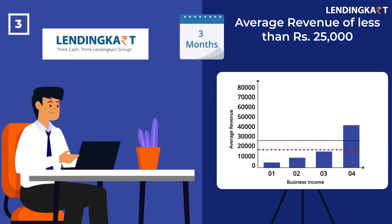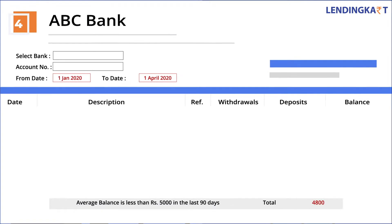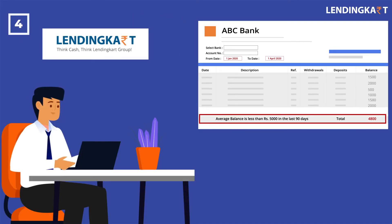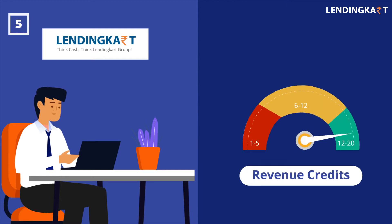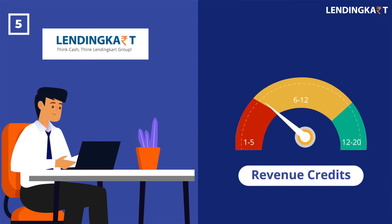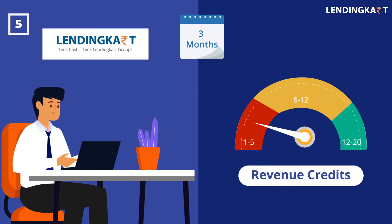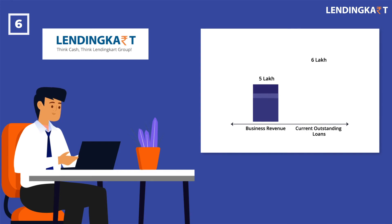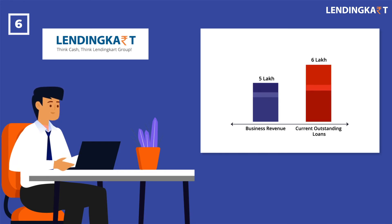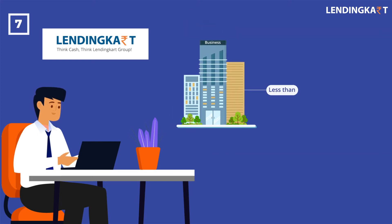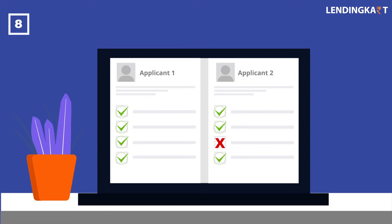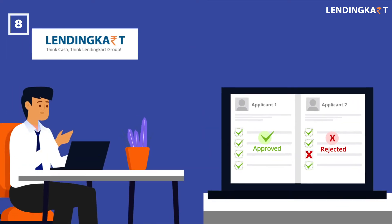Additional rejection criteria include: average daily balance of less than rupees 5,000 in the last 90 days, revenue credit counts of less than six in the last three months, being over-leveraged — where the last three months' business revenue is compared with current outstanding loans — age of business less than seven months, and any negative check on the applicant's profile.